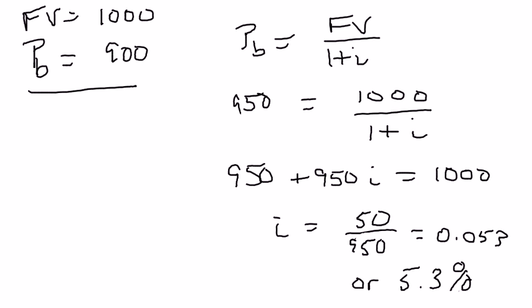Now notice, we increase the price of the bond from $900 to $950, and that ended up decreasing the yield to maturity from 11.1% to 5.3%. So there's an inverse relationship between the price of a bond and the yield to maturity.